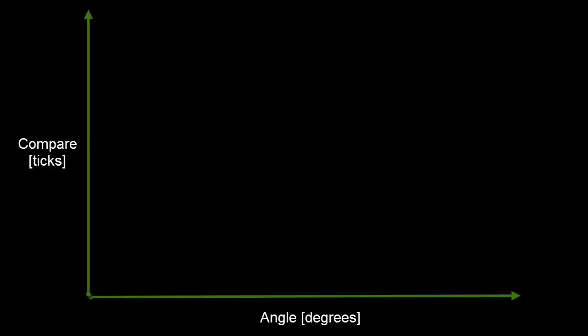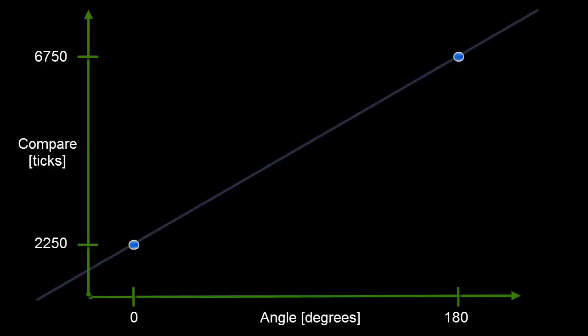I'm going to write two points on this plot that we know. First, we know that the 0 degree angle corresponds to 2250 ticks of the timer — we calculated that a couple of videos ago. Secondly, the angle of 180 degrees corresponds to 6750 ticks. These two points define a line, and this line defines a conversion between angle in degrees and number of ticks.